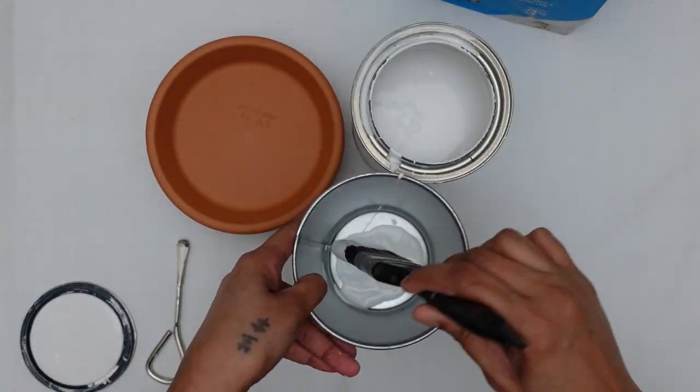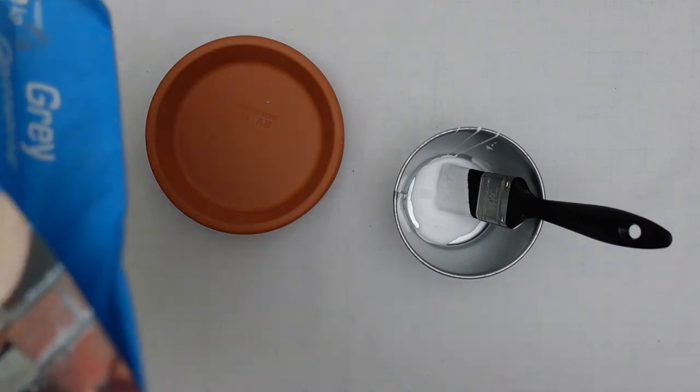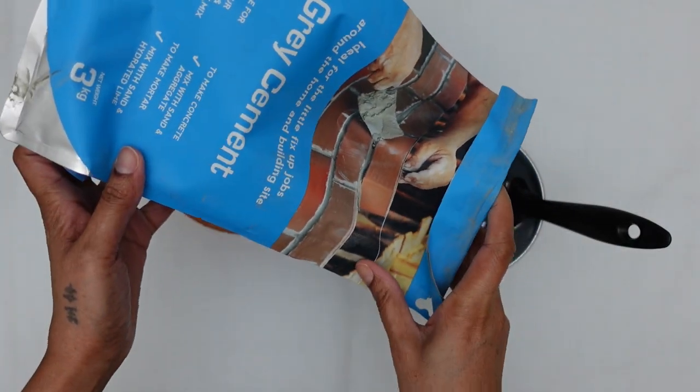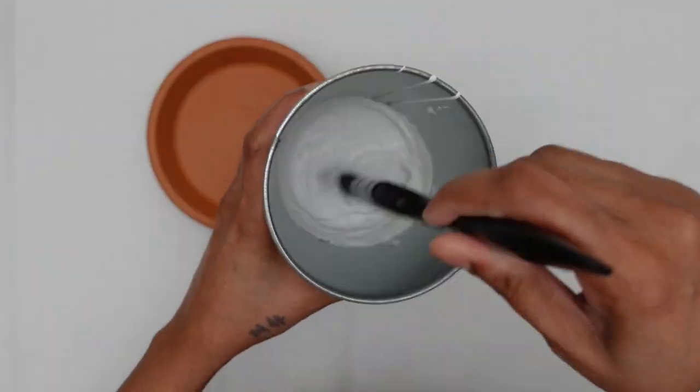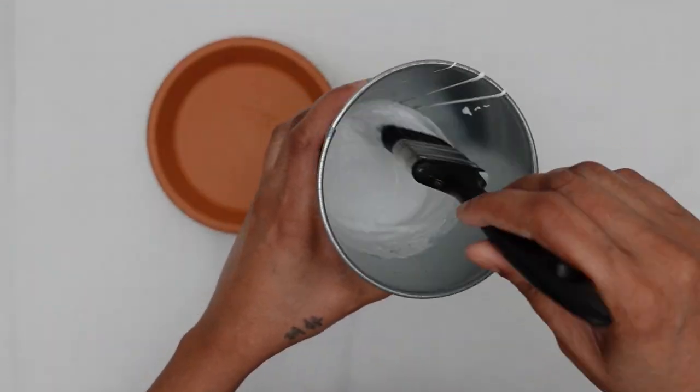For this project, I wanted to try something new, so I decided to mix some cement in my chalk paint. This gave the paint a little bit of texture and thickness as well.